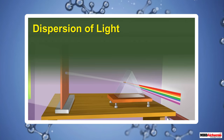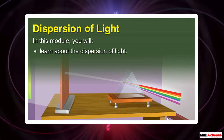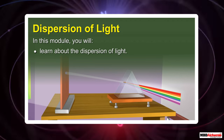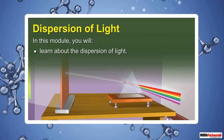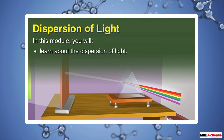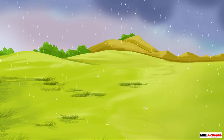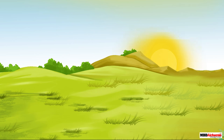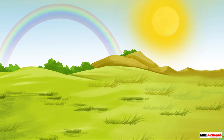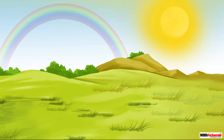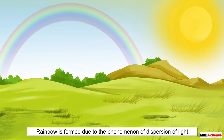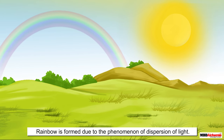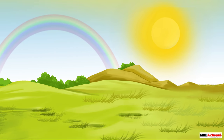In this module you will learn about the dispersion of light. Sometimes after the rain we see a rainbow in the sky — it looks spectacular. A rainbow is formed due to the phenomenon of dispersion of light.